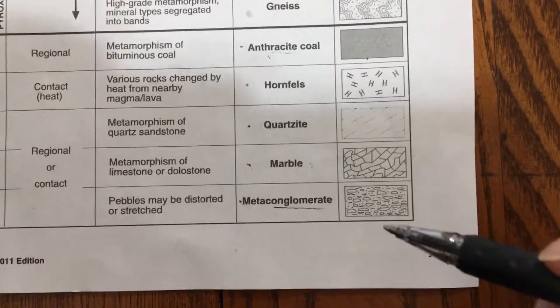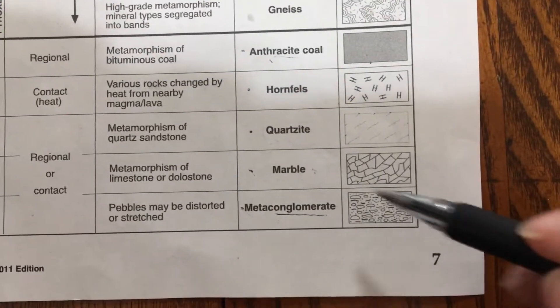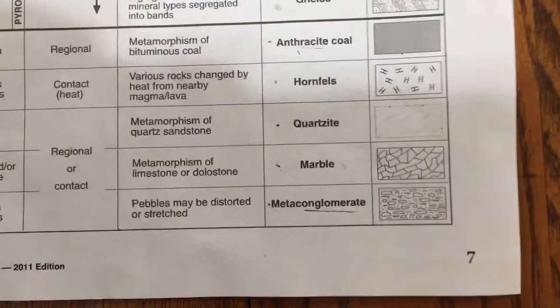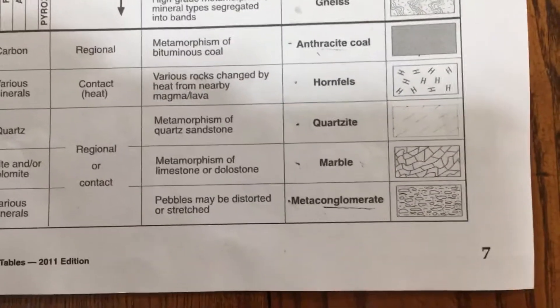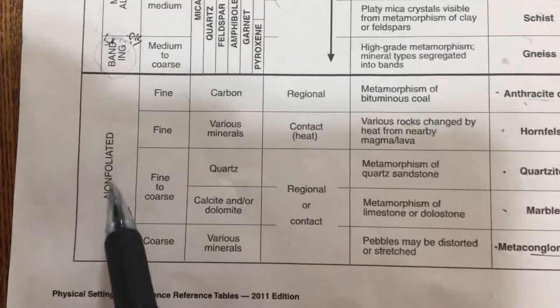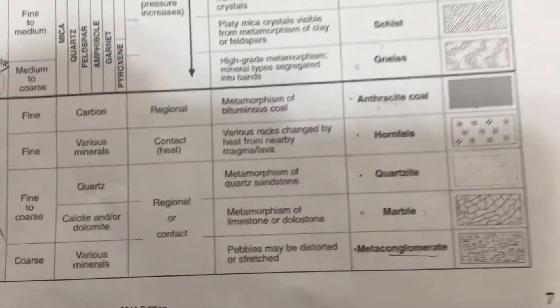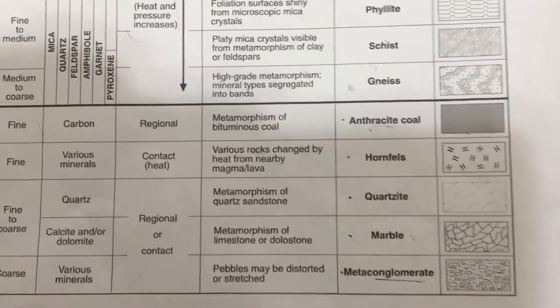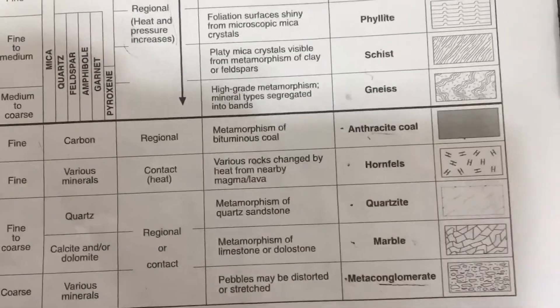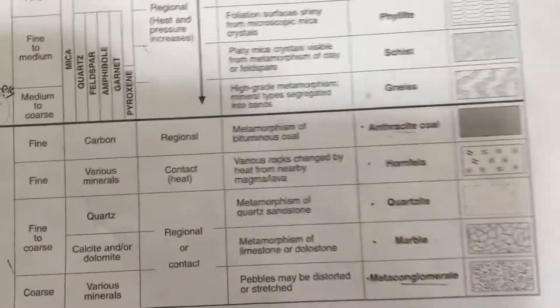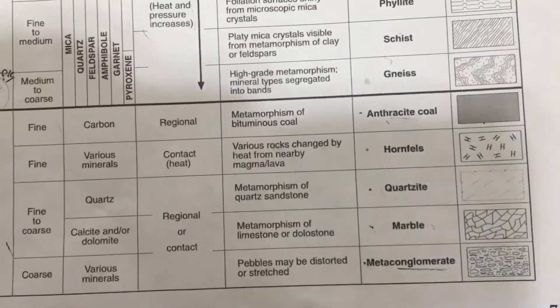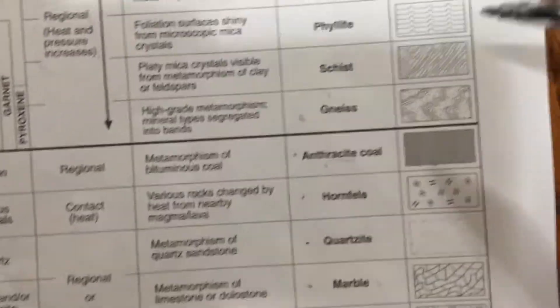So they'll be more aligned — which is tempting to say that's foliation, but it's not really considered foliation because it's not the minerals that are doing it, it's just the bits within the rock. What else — hornfels...